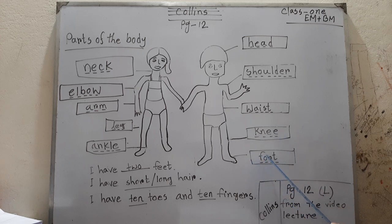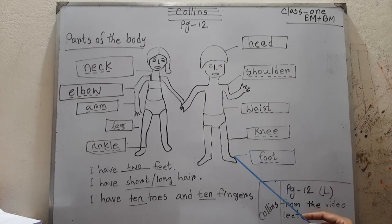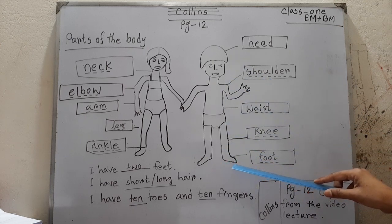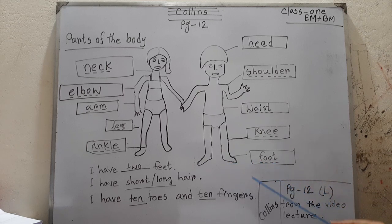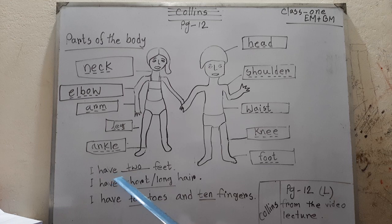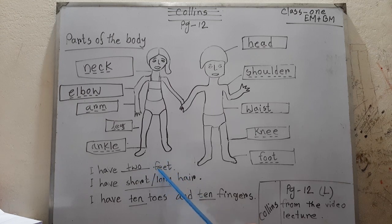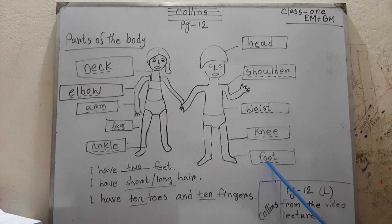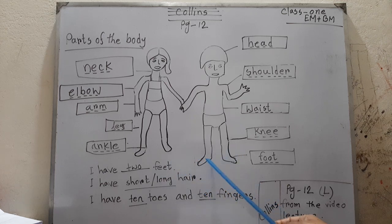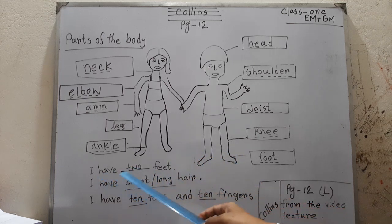Foot means 'pa' or 'pier' in Bengali. The foot is the base and bottom part of the human body. Note the plural form: 'foot' is singular and 'feet' is plural. For example: I have two feet.